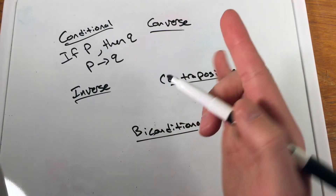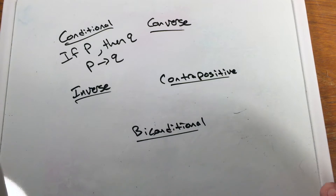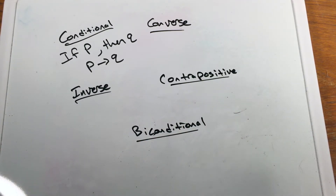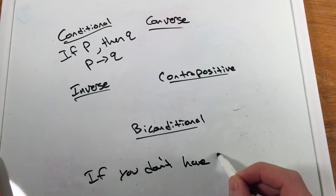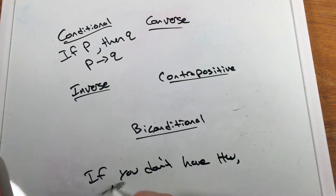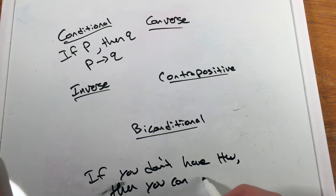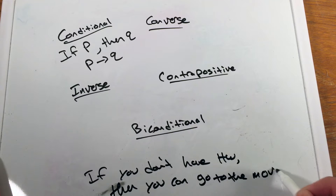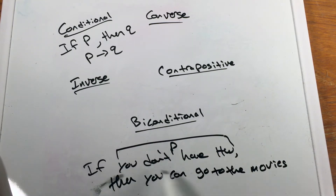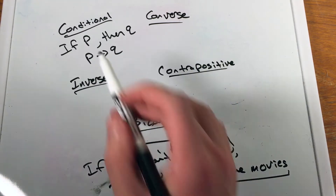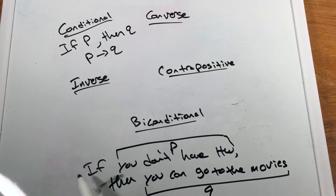The converse is where we switch P and Q. P and Q are statements — whatever they are. For example, we can say: 'If you don't have homework tonight, then you can go to the movies.' So our conditional statement is: if you don't have homework, then you can go to the movies.